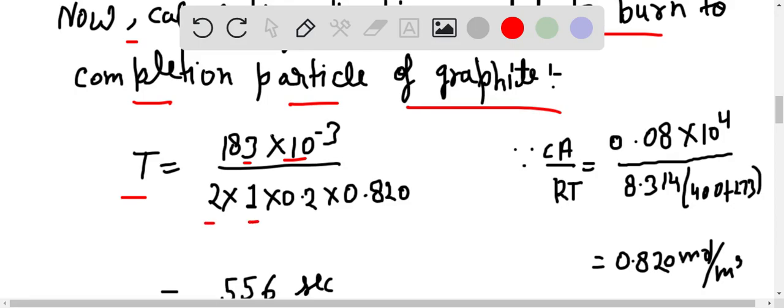By 2 multiplied by 1 multiplied by 0.2 multiplied by 0.820. Here from the equation that CA by RT is equal to 0.8 multiplied by 10 to the power 4 divided by 8.314, 400 plus 273, and here it...